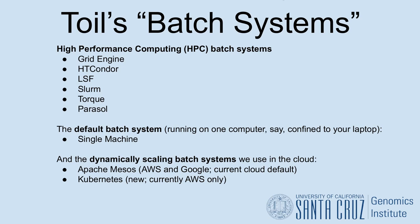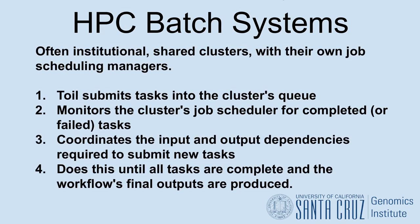To go into each of these just a bit further: HPC systems are often institutional shared clusters with their own job scheduling managers. In order to run on them, Toil submits tasks into the cluster's queue, monitors the cluster's job scheduler for completed or failed tasks, coordinates the input and output dependencies required to submit new tasks, and does this until all tasks are complete and the workflow's final outputs are produced.